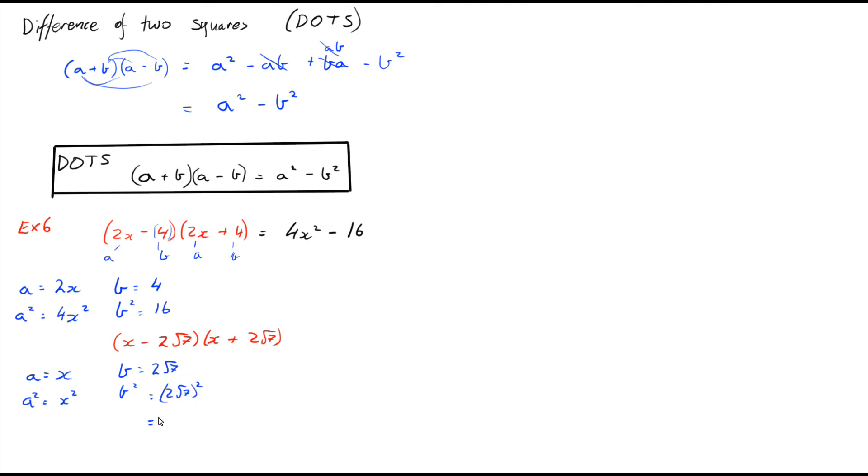If we square those, a² would equal x², and b² would equal (2√7)². We can actually simplify that down: it's 4 times the square root of 7 squared. They kind of cancel out, the root and the square, so it's just 4 times 7, which equals 42. So for (x - 2√7)(x + 2√7) we get an answer of x² - 42.